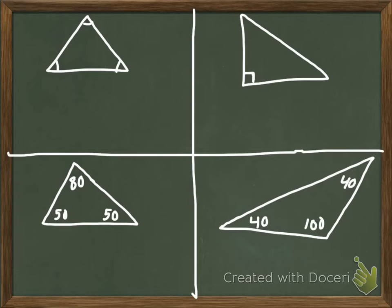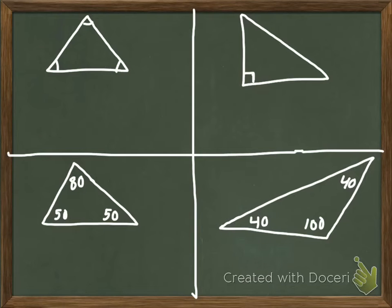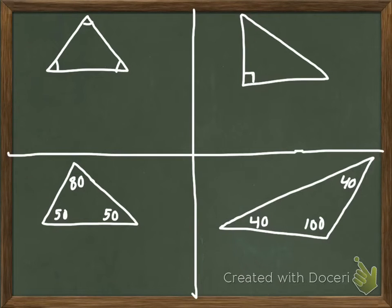Now we're going to talk about classifications by angles. There are four classifications by angles: equiangular, acute, right, and obtuse. In your group, pause the video and discuss which of these triangles you think is the equiangular, which is the acute, the right, and the obtuse.